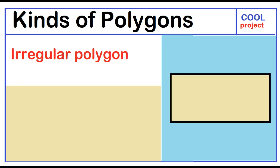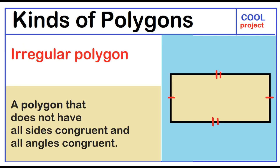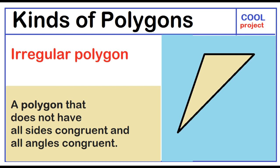Irregular polygon. A polygon that does not have all sides congruent and all angles congruent.